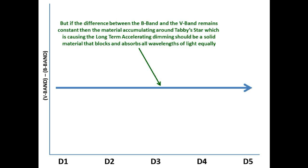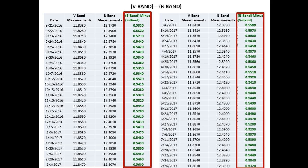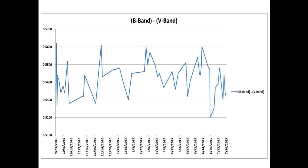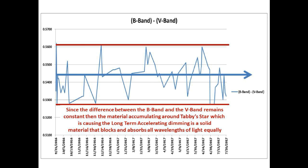So let's do the math. If you take the B-band minus the V-band over these last 10 months, we get this column of deltas, and graphing them we get this result. Notice that the deltas remain well contained within the channel indicated by the red parallel lines. Therefore, since the difference between the B-band and the V-band remains constant, the material accumulating around Tabby's Star causing the long-term accelerating dimming is a solid material that blocks and absorbs all wavelengths of light equally.